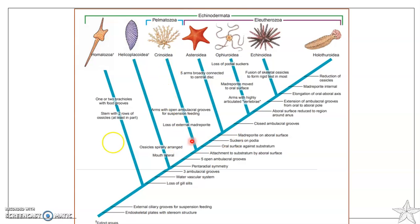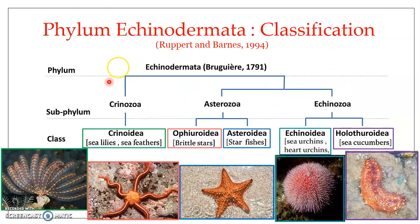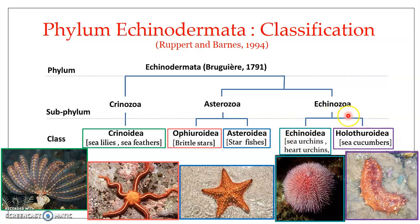So that is about the classification of phylum Echinodermata. To conclude: phylum Echinodermata is divided into three subphyla. Subphylum Crinozoa includes class Crinoidea. Subphylum Astrozoa includes classes Ophiuroidea and Asteroidea. Subphylum Echinozoa includes classes Echinoidea and Holothuroidea.